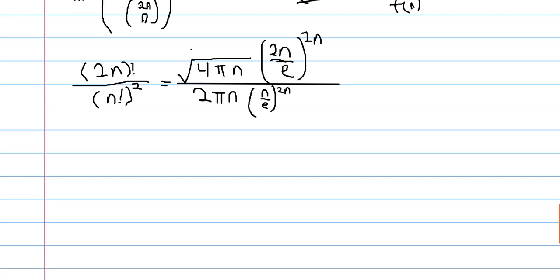And this is equal to square root of 4 pi n times 2n over e to the 2n, divided by 2 pi n times n over e to the 2n. And just after plugging in Sterling's approximation, this is the limiting form. Really I should write a limit, but I'm too lazy to do that.